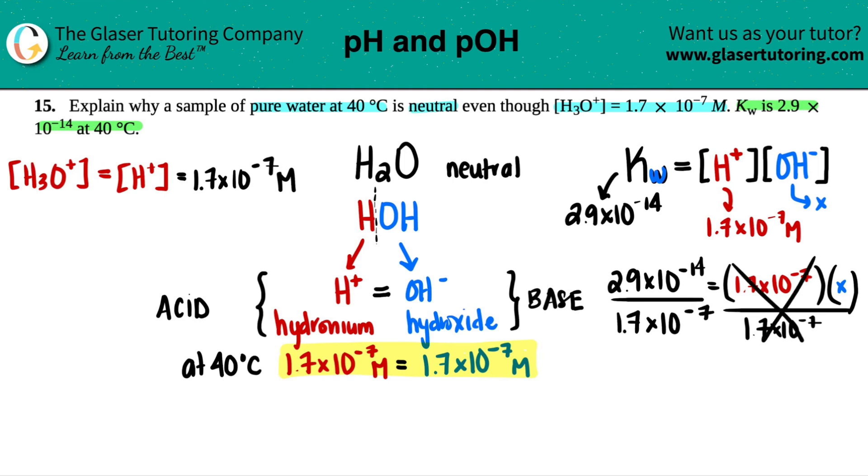And let's see. This goes bye-bye. Calculator is out. 2.9 times 10 to the negative 14th divided by 1.7 times 10 to the negative seven. Drum roll, please. Ah, would you look at that? And we get 1.7. I even forgot the equal sign. I'm having too much fun. This was the OH minus concentration, right? And this equals basically 1.7 times 10 to the negative seventh. And that is in molarity.